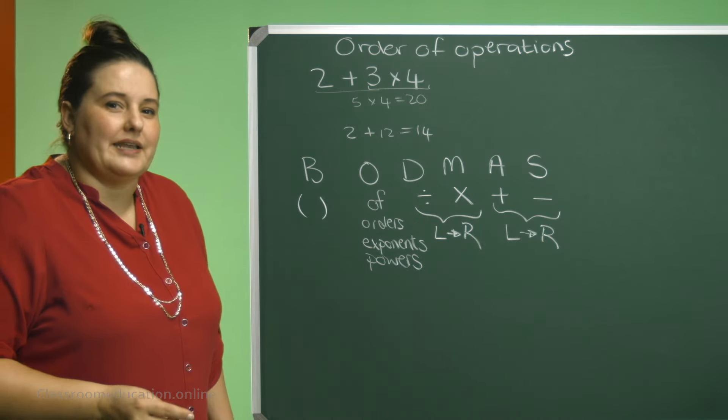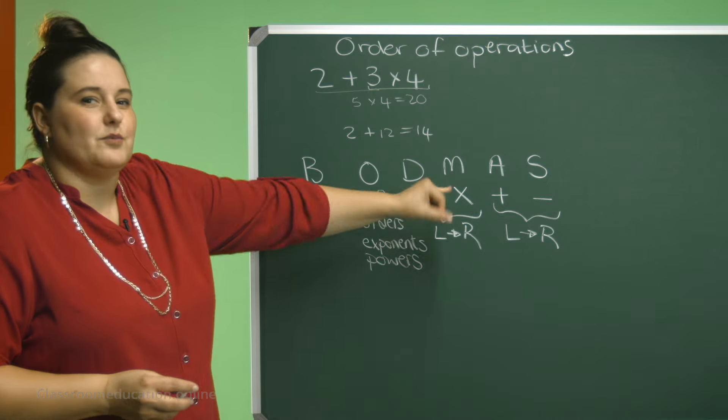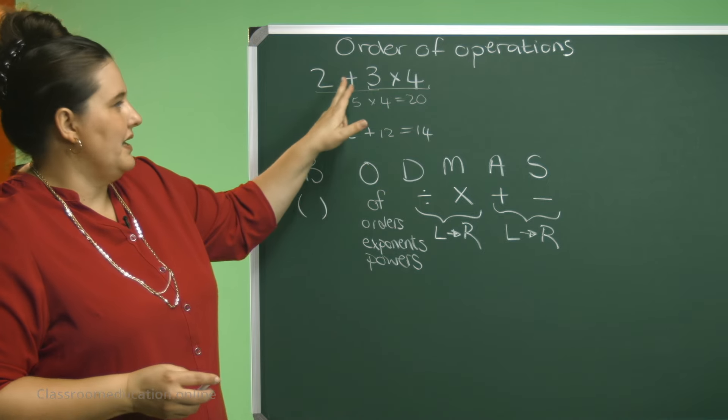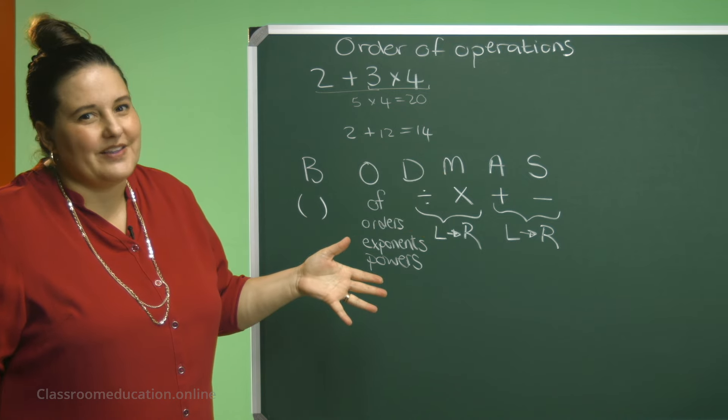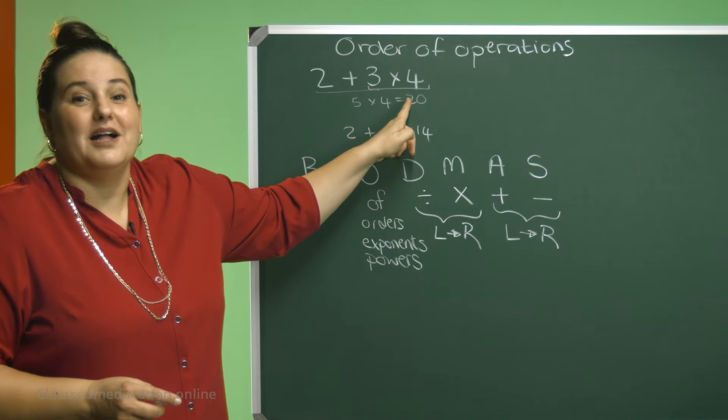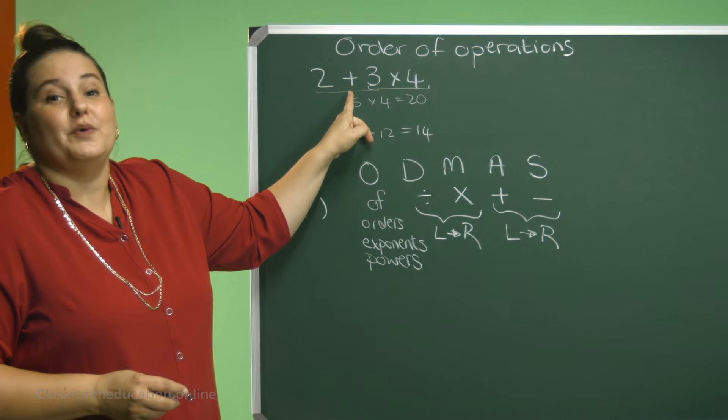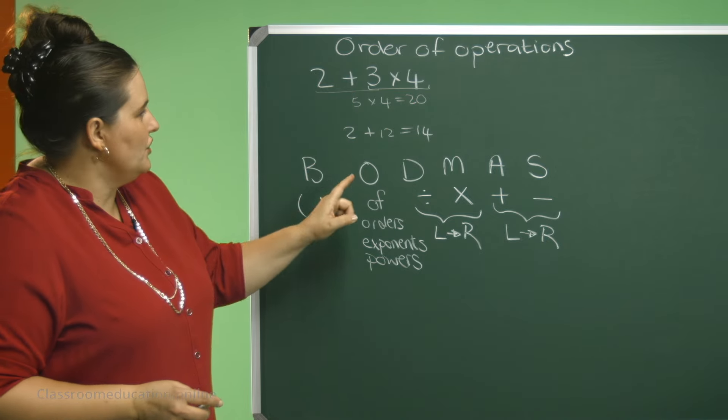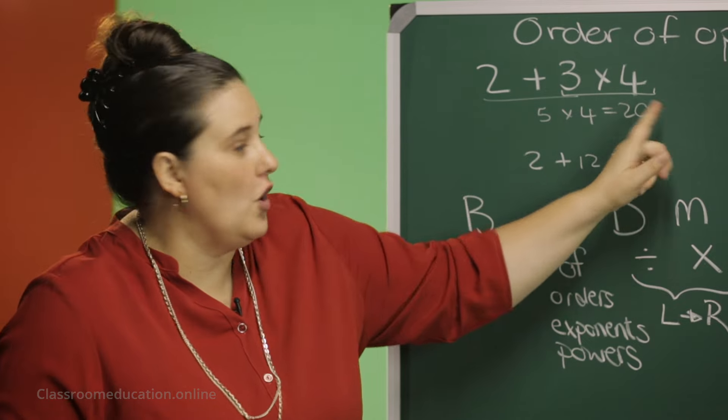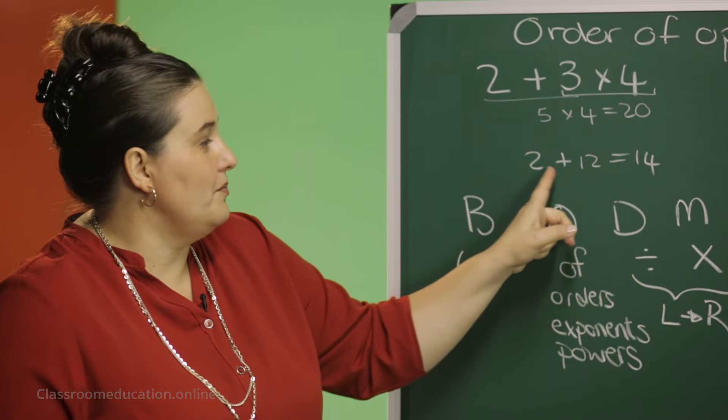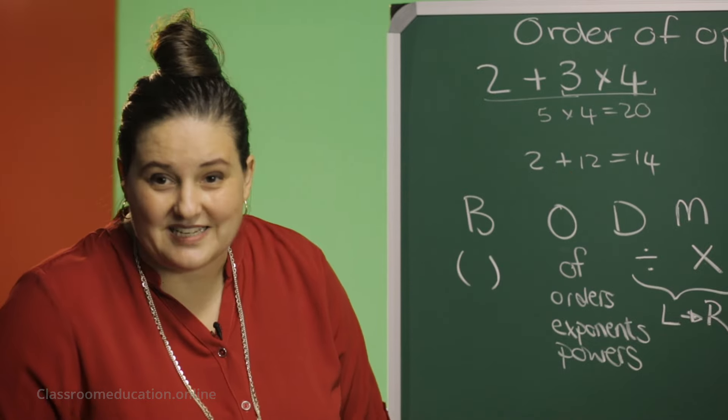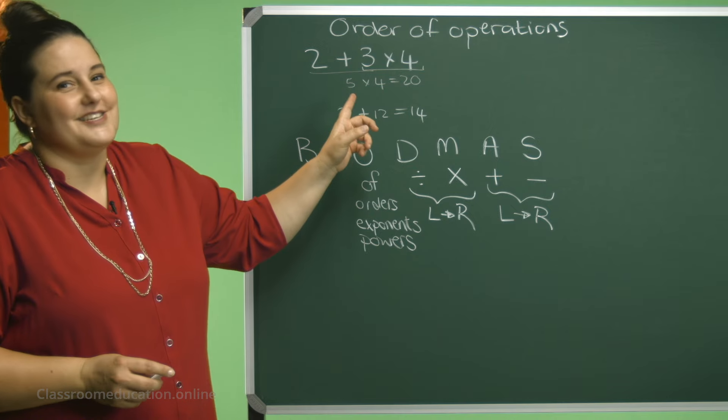So let's have a look at our example that we did, that we started off. 2 plus 3 times 4. Who's now correct? Sorry, this time it's me. Because we need to do the multiplication before we do addition. So you need to say 3 times 4 is 12. And the 2 should be added. So 2 plus 12 is 14. And the answer is not 20.